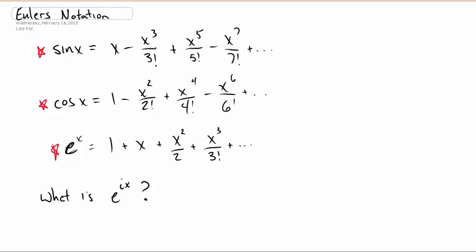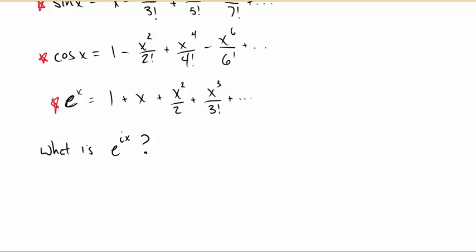Similarly, cosine is 1 minus x squared over 2 factorial plus yada yada yada, and e to the x is 1 plus x plus x squared over 2 factorial plus x cubed over 3 factorial, and so on and so on. My question is, what is e to the ix?